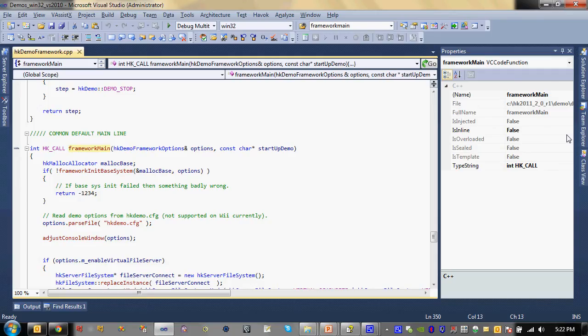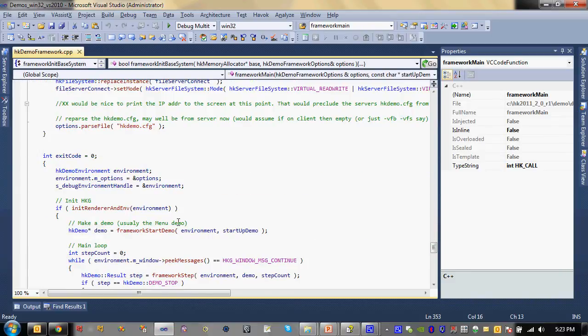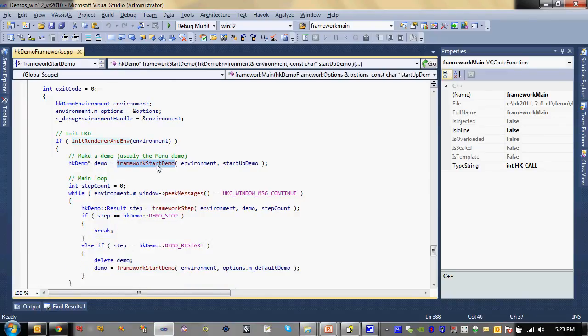So here we are in hk-demo-framework.cpp. And that's under demo, demos, demo-common, demo-framework. We have framework main, which, as we said before, is where everything begins. So we start out by initializing the base system. Again, the memory system, file system, and so on. And then we come down in here, initialize the renderer and the environment. And then once we do that, we go ahead and start the demo.